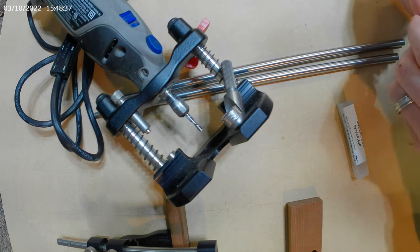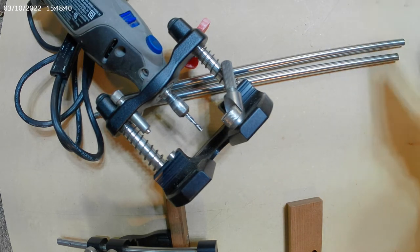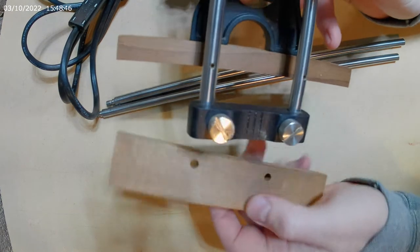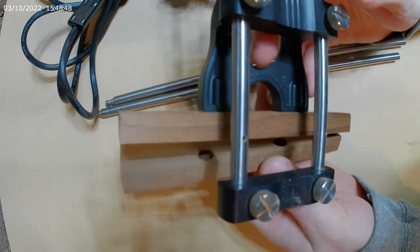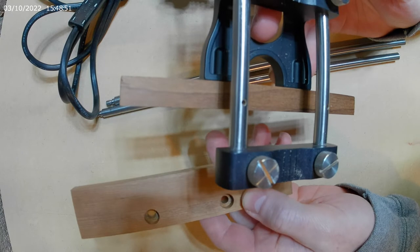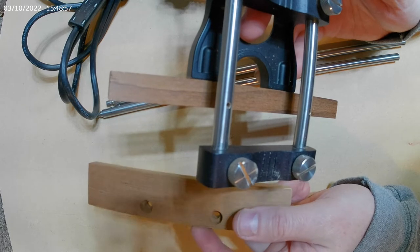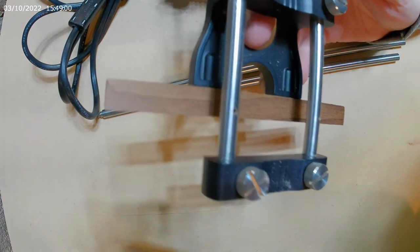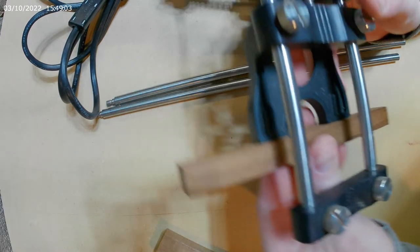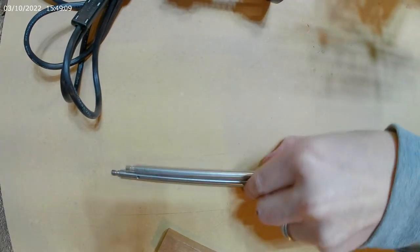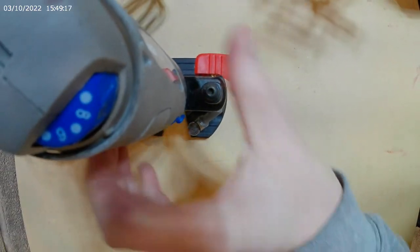Let's see what else, the fence, the fence is another work of art. The fence comes with two different fences, fence covers, I guess you would call these, these are torrified maple as is most of Veritas' offerings on their planes and stuff like that. So they give you a tall one, they give you a short one. I use the short one because a lot of my routing I'm doing on three quarter inch or less.